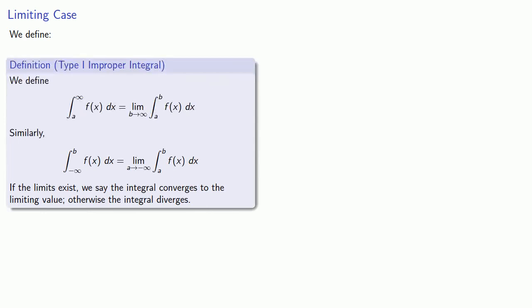So how can we extend our definition of the definite integral to include these cases? For a type 1 improper integral, where maybe our upper bound goes to infinity, we'll define it in terms of a limit as the upper bound goes to infinity of a definite integral. And similarly, if our lower bound is minus infinity, we'll define that as the limit of a proper integral.